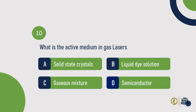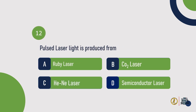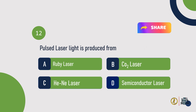Question 10: What is the active medium in gas lasers? Answer: Gaseous mixture. Question 11: Which of the following is not a characteristic of laser? Answer: Divergent. Question 12: Pulsed laser light is produced from — Ruby laser.